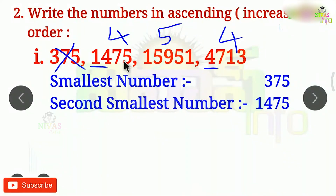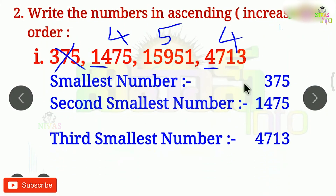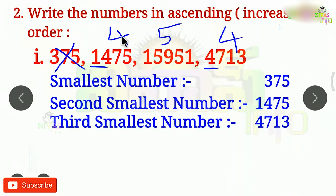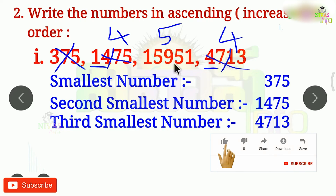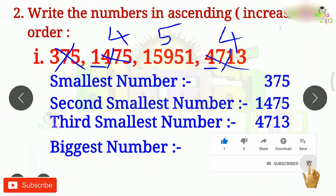What is the second smallest number? This number is 4713. The second smallest number is 4713. This is the last middle number. That is the big number — 15951.